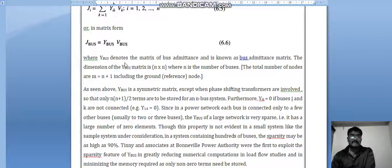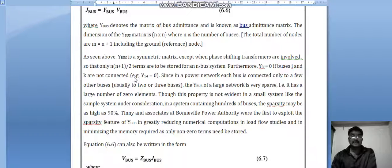Where Ybus denotes the matrix of bus admittance and is known as the bus admittance matrix. The dimensions of the Ybus matrix are n by n, where n is the number of buses. As seen above, Ybus is a symmetric matrix except when phase shifting transformers are involved.